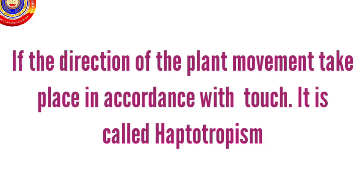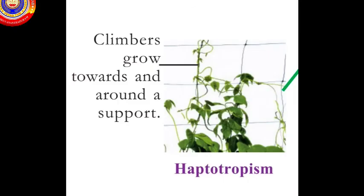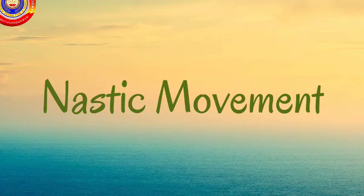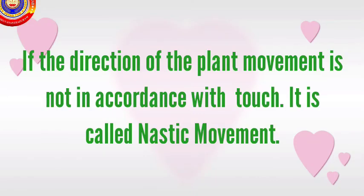Our next topic is haptotropism. If the direction of the plant movement takes place in accordance with touch, it is called haptotropism. Here, climbers grow towards and around a support. Examples include the pea plant, bitter gourd, etc.